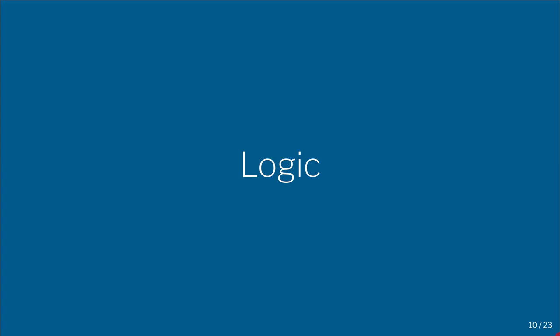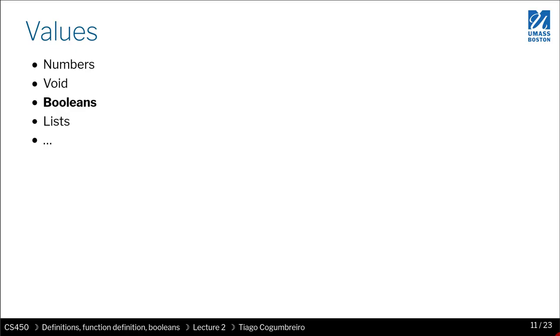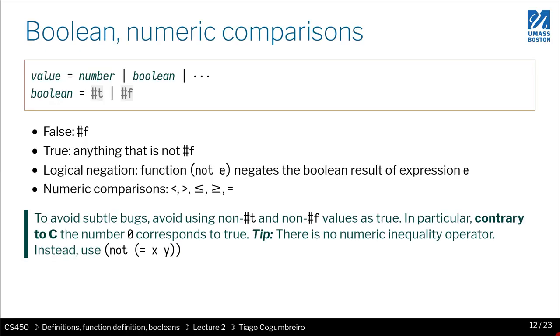In this lesson we introduce the logical connectives and boolean values in Racket. We're going to extend firstly values — we'll just have true and false — and for expressions we're going to have numerical comparisons and the logical OR, AND, and NOT as well.